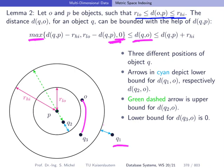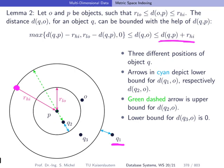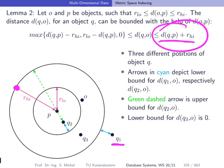Looking at the upper bound, similarly to the previous discussion: the upper bound is d(Q,P) plus R_high. If we have Q1 here, the maximum distance between Q1 and O happens if O is located on the far side of the donut. The distance is then R_high plus d(P,Q). We will later see how we use this to prune the space we have to search in our index structures.